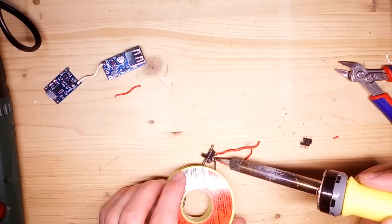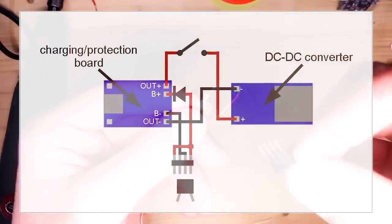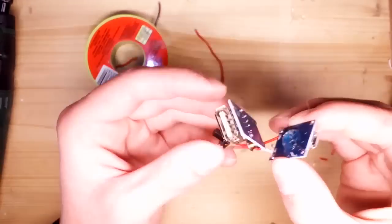I connected the boards as shown in the schematic. I also added a little switch to be able to turn off the USB charger, and a diode to make it impossible to connect batteries with the wrong polarity.